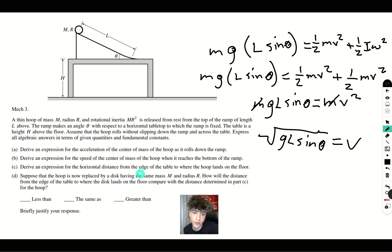Derive an expression for the horizontal distance from the edge of the table to where the hoop lands on the floor. So, we know that the acceleration is gravity in the vertical direction and the initial vertical speed is 0.